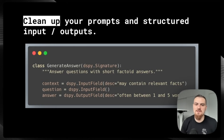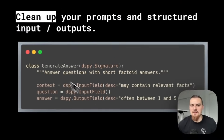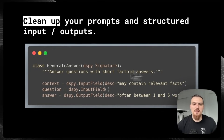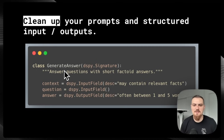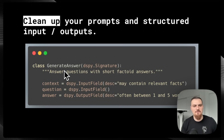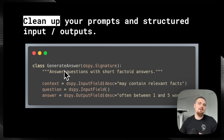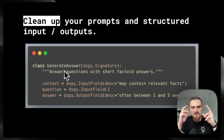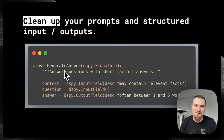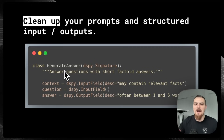DSPY does this with the signature. In this example, we have the generate answer that inherits the signature, and we write a doc string that gives the prompt of what the task is — in this case, 'answer questions with short factoid answers.' A part of DSPY that we'll get into in the second half of this video is that DSPY can optimize these prompts for you. You can write something with just a high-level description of the task — you don't need to be tweaking the specific language, because as we all know, subtle changes can massively impact the performance. So DSPY will then optimize this instruction for you.